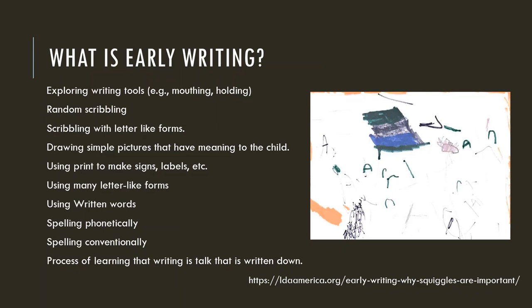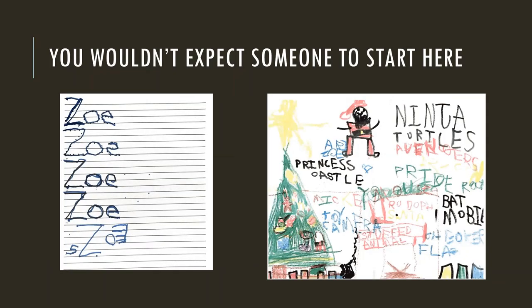So let's talk about what early writing really looks like. Think about where your child or student is on this continuum. Early writing includes exploring writing tools, random scribbling, scribbling with letter-like forms, drawing simple pictures that have meaning to a child, using print to make signs or labels, using many letter-like forms, using written words, spelling phonetically or conventionally, and the process of learning that writing is talk that is written down. It is important that we keep this developmental perspective in mind. We wouldn't expect a nine-month-old or even a two-year-old to be doing these things. Yet do we expect a 12-year-old to do these? What if that 12-year-old is mouthing writing utensils or is scribbling?